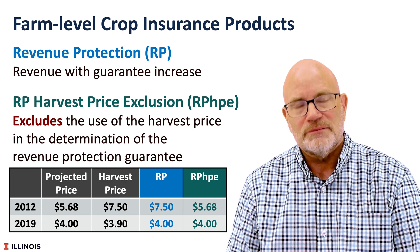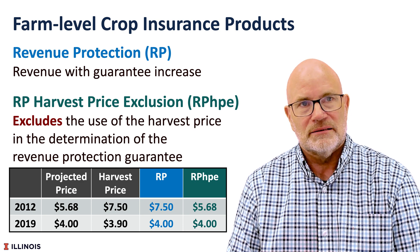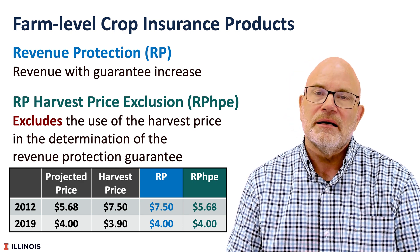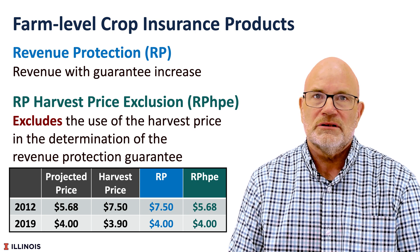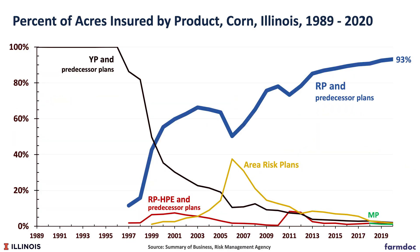If the harvest price is below the projected price, like happened in 2019, RP and RPHPE use the same price in determining the guarantee. If we look at Illinois corn — and it also holds for soybeans — RP is the most prevalent policy used.